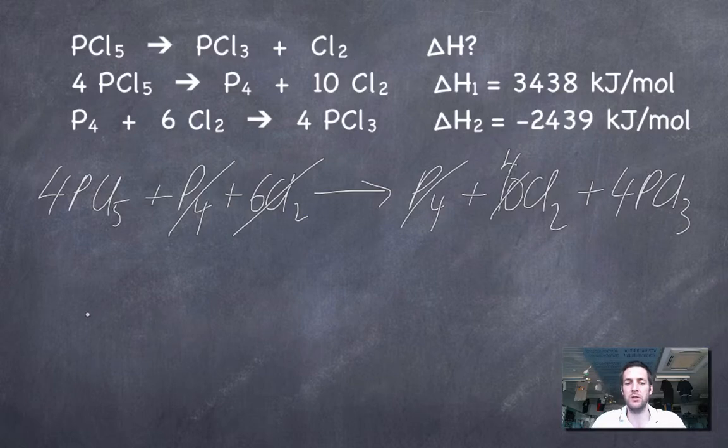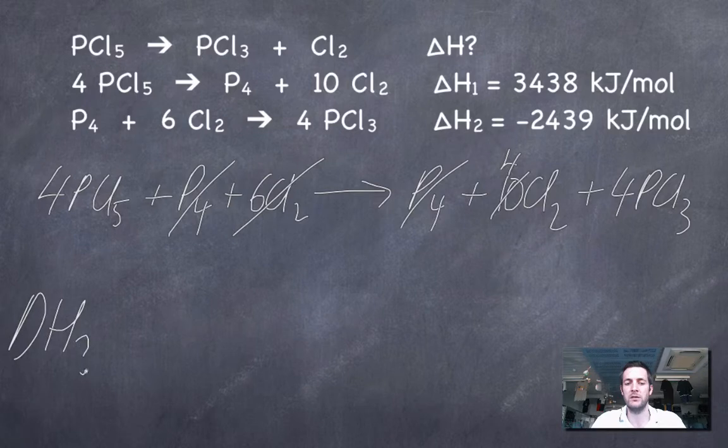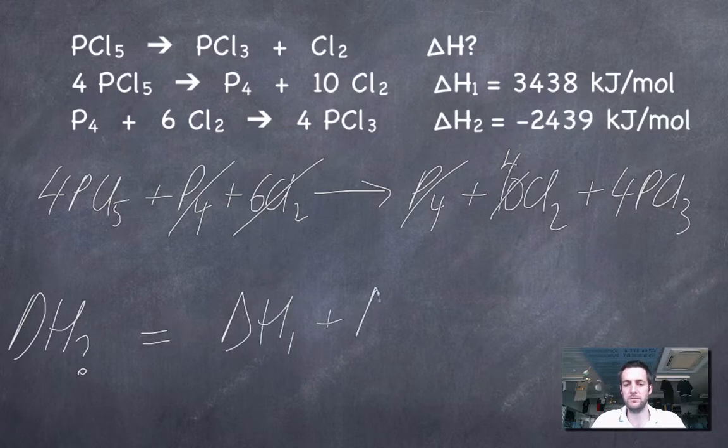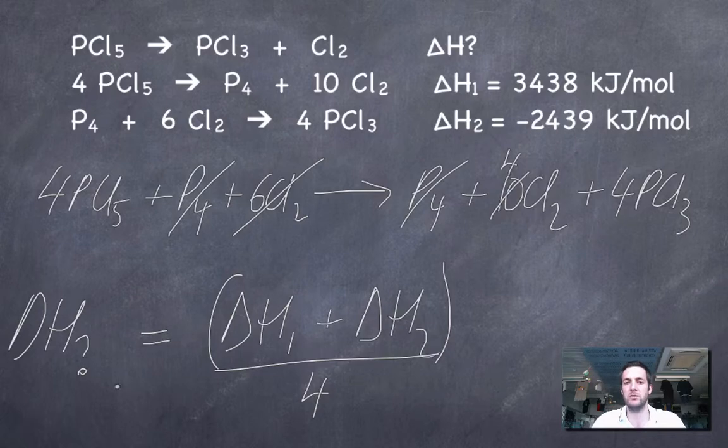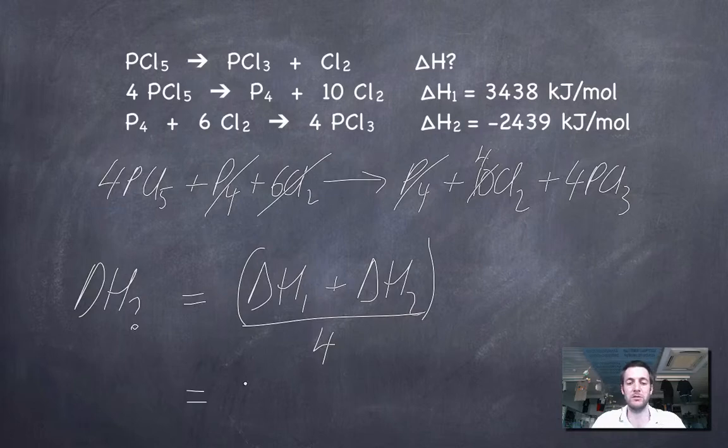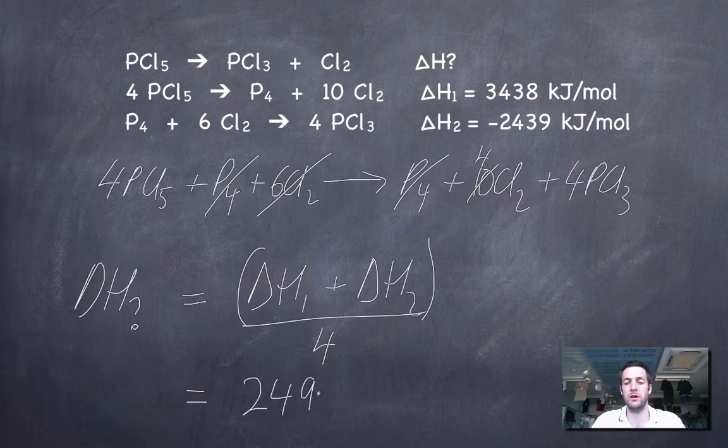So in other words, delta H question mark is equal to delta H1 plus delta H2, but just like we saw with the cycle, we've got to divide this lot by 4 because delta H1 plus delta H2 is 4 times as great as delta H question mark. So divide it by 4, and again we end up with exactly the same answer, which we decided was 249.8 kilojoules per mole.